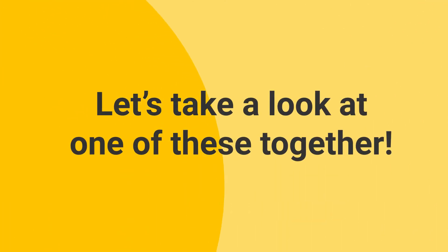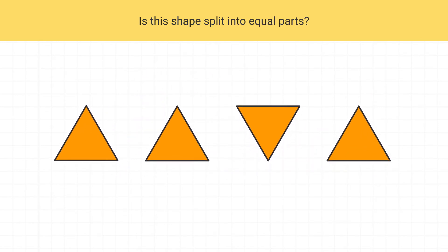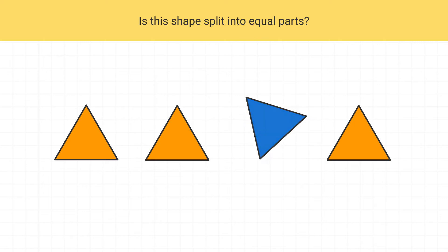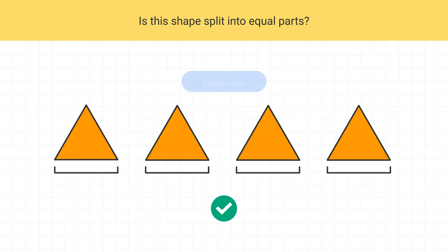Let's take a look at one of these together now. Let's identify if this shape is split into equal parts. When we look at the pieces of this shape, you first might notice that this one is pointing a different direction. But if we just spin them around, are the pieces all the same size? Yes, we can see that all of the parts of this shape are the same size.